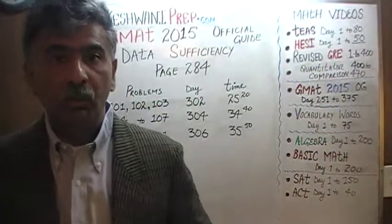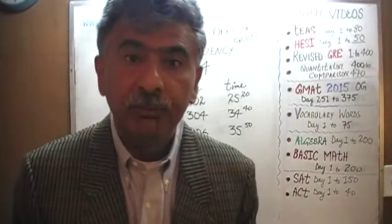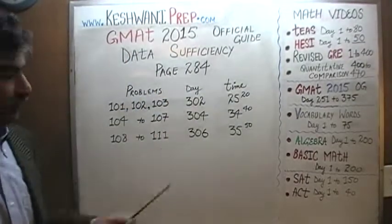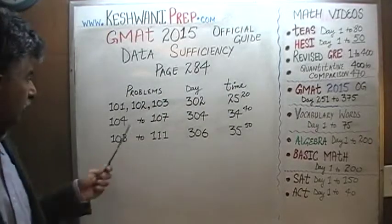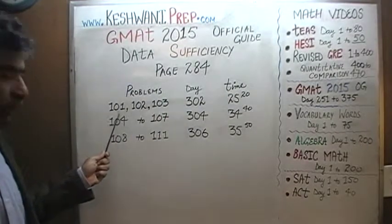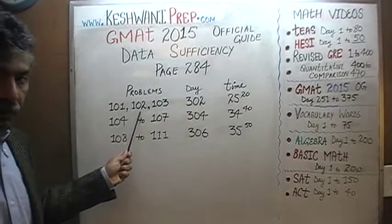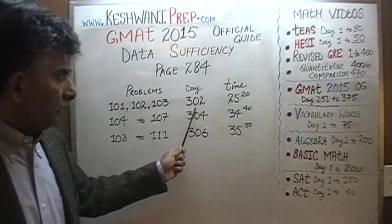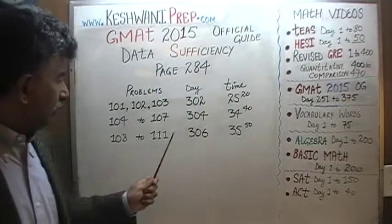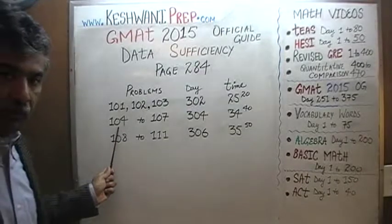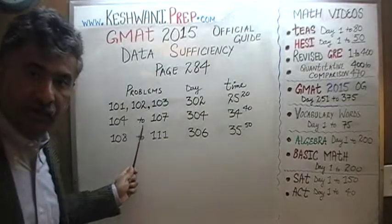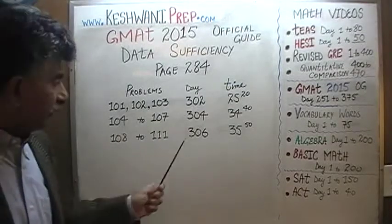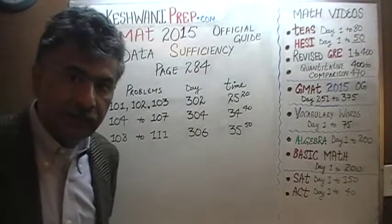Today we will look at all the data sufficiency problems appearing on page number 284. You will find the solutions to problems 101, 102, and 103 — those three problems were solved on day 302. You will find the solutions to problems 104, 105, 106, and 107 — those four problems were solved on day 304.